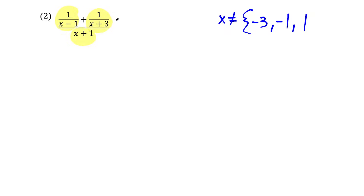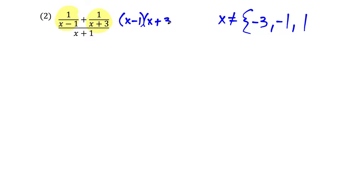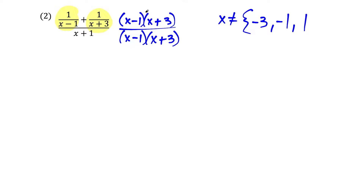For the next step, we're going to multiply by the least common denominator of the fractions within the fraction. I'm not counting x plus one as a denominator because technically I can think of this as x plus one over one. So I'm going to multiply everything by x minus one times x plus three — on top and on bottom. From here, we just have to distribute.